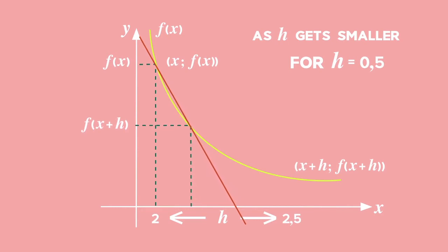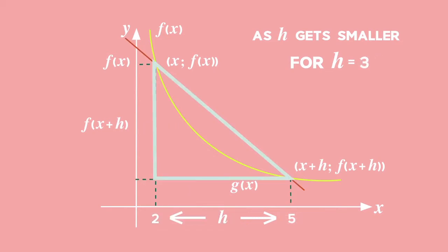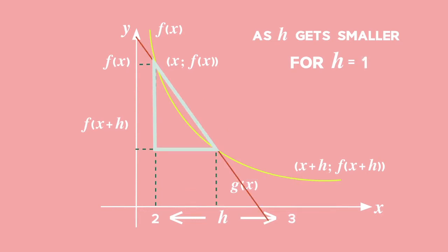In each of the three graphs, g of x is a straight line, or secant, with the same gradient as the average gradient of the curve between x and x plus h. Can you see that as h decreases on the x-axis, the two points get closer together? Can you also see that as the two x values get closer together, the average gradient between the corresponding points on the graph changes?